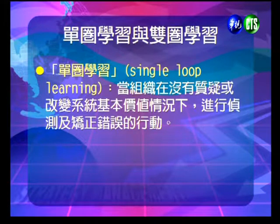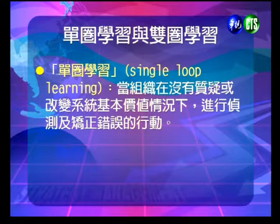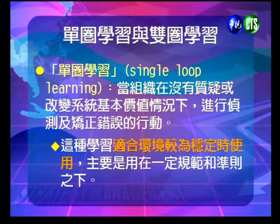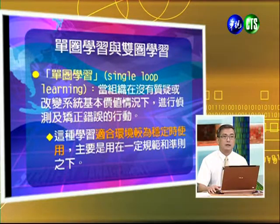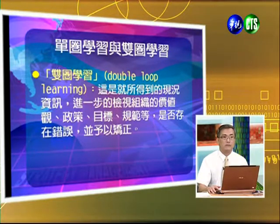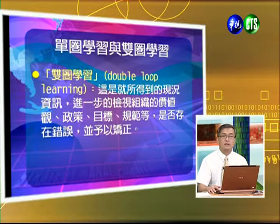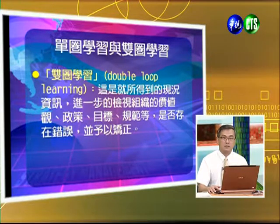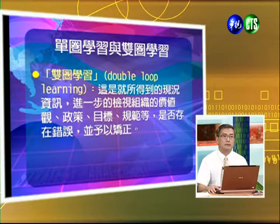在學習裡面我們可以分為單圈的學習跟雙圈的學習。單圈學習是指組織在沒有質疑或改變系統的情況下，進行政策跟矯正錯誤的行動。這種學習比較適合在穩定的環境中，主要用在有一定規範跟準則之下的學習。雙圈學習則是進一步用所得到的現況資訊，來檢視組織中的價值觀、政策以及目標與規範等等是否存在錯誤，並予以矯正。